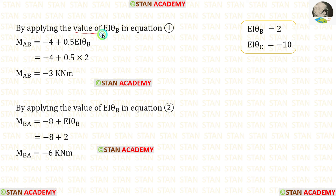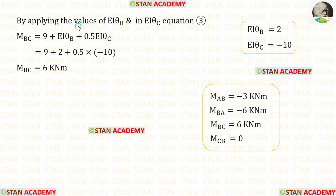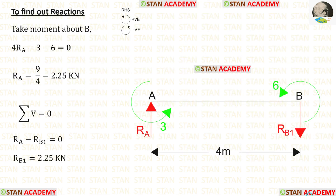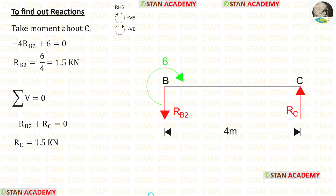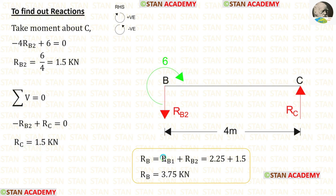Applying the value of EI·θ_B in equation 1 gives M_AB, and applying it in equation 2 gives M_BA. All moments have now been calculated. Now let us find the vertical reactions. For span AB, taking moments about B gives R_A, and applying equilibrium gives R_B1. For span BC, taking moments about C gives R_B2, and applying equilibrium gives R_C. Adding R_B1 and R_B2 gives the total reaction R_B.